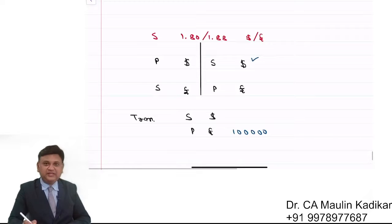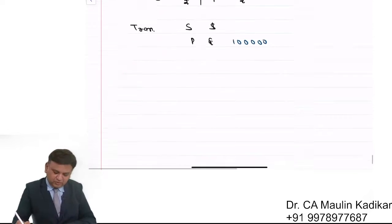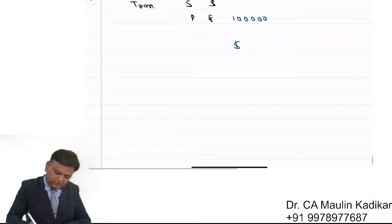Sell dollar, so we will select this rate. What will we write, friends? Dollar and pound: 1.88 dollar for one pound. So how much dollar for one lakh pound? That is the question.